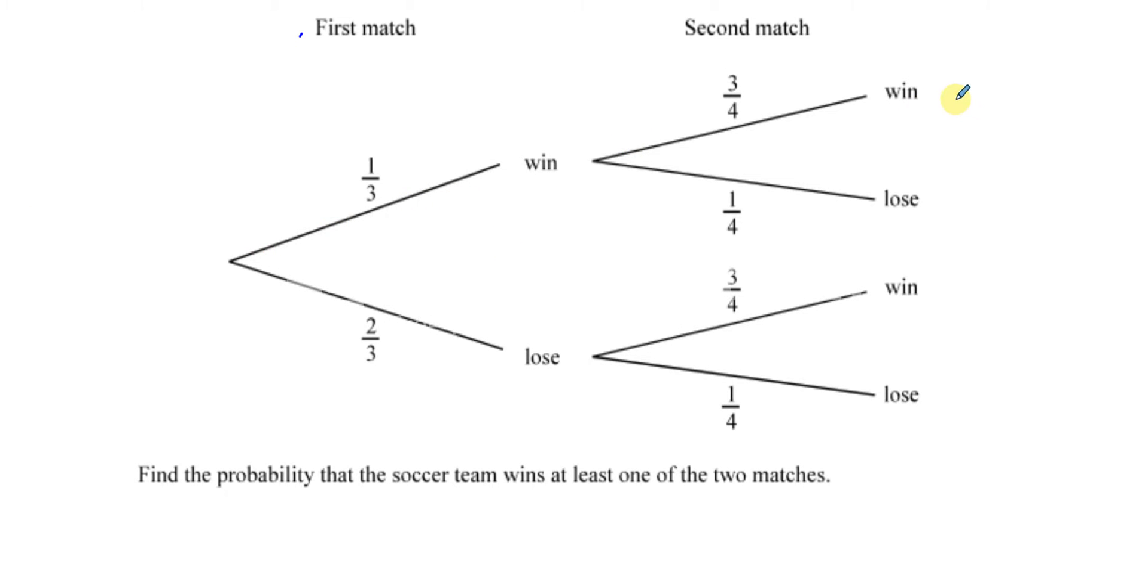So what we have is, I'm going to write down here the outcomes. The outcomes are they win both matches, they win the first and lose the second, they lose the first and win the second, and they lose both matches. Those are the four different outcomes that could happen.